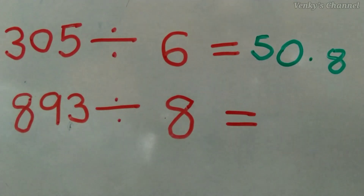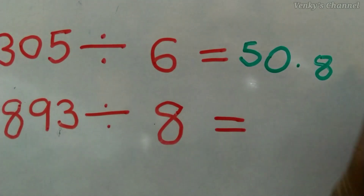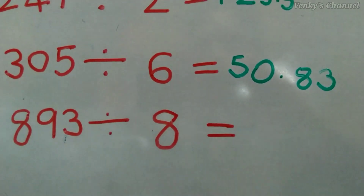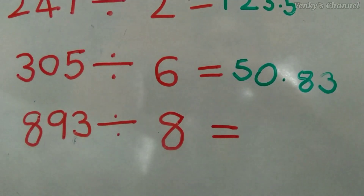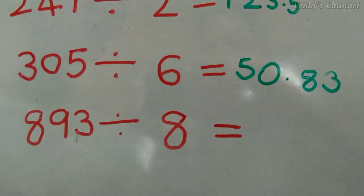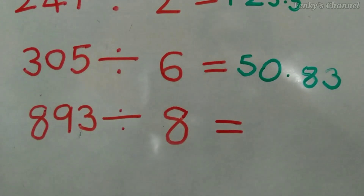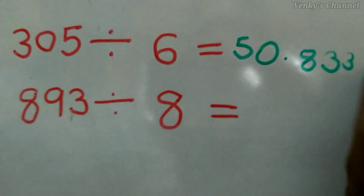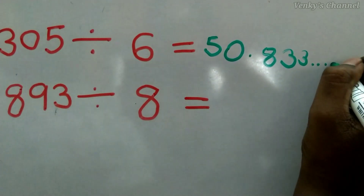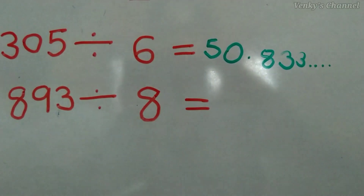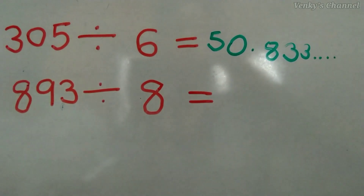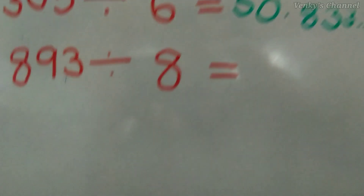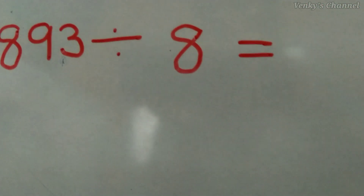50 ÷ 6: 6 × 8 = 48, remainder 2. Putting a 0 beside 2 makes it 20, and 6 × 3 = 18, so it keeps going as 50.8333... and so on.